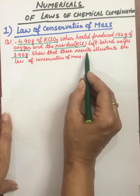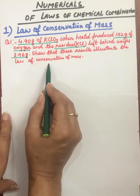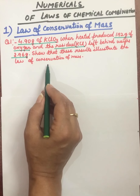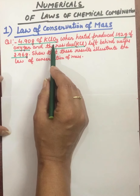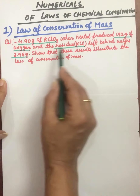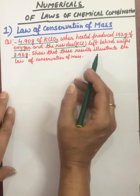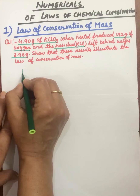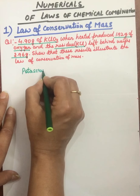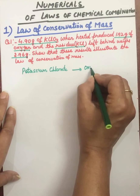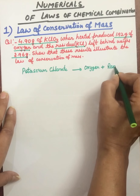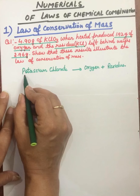Show that these results illustrate the law of conservation of mass. This law says the mass of reactants is always equal to the mass of the products. Read the statement carefully, find out the reactants and products, and write the chemical equation. From that it's clear potassium chlorate is the reactant, and on heating it gives oxygen and KCl as products.